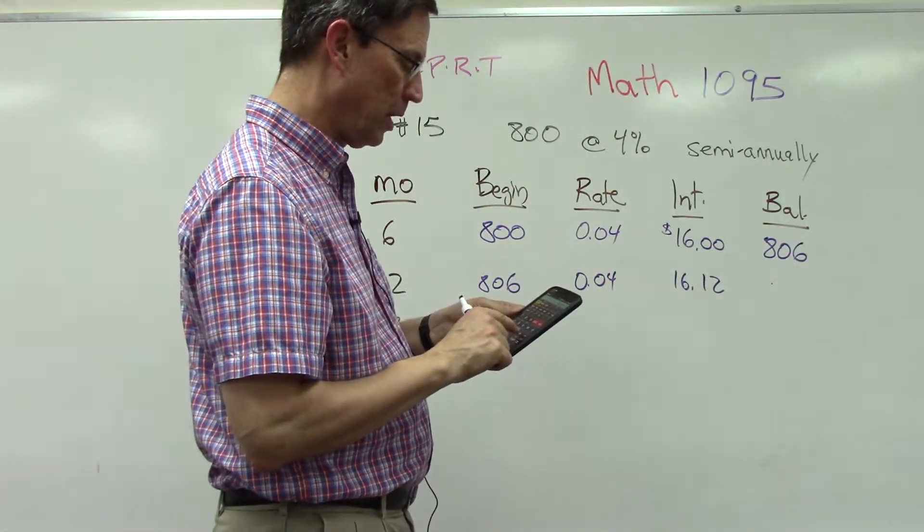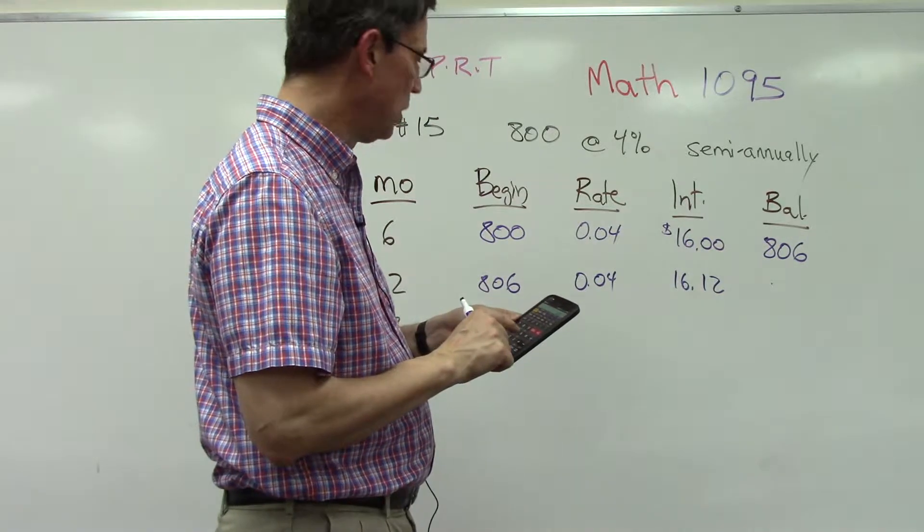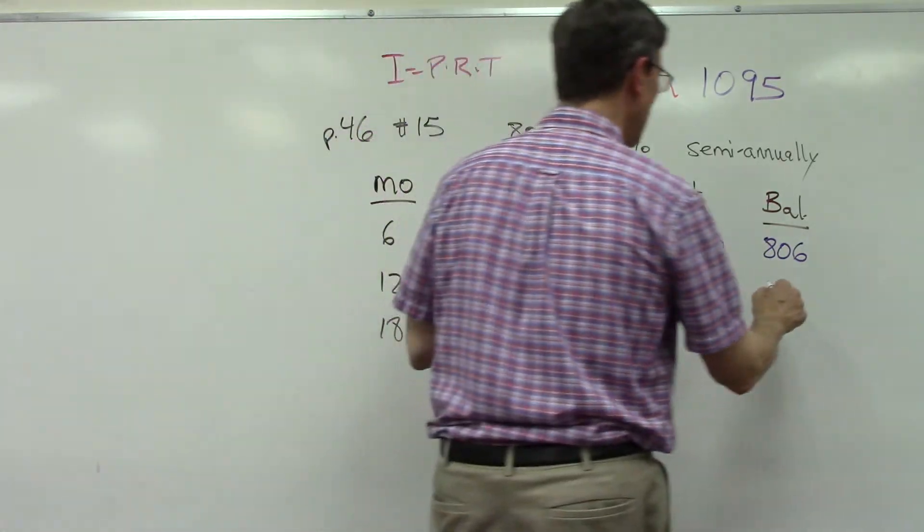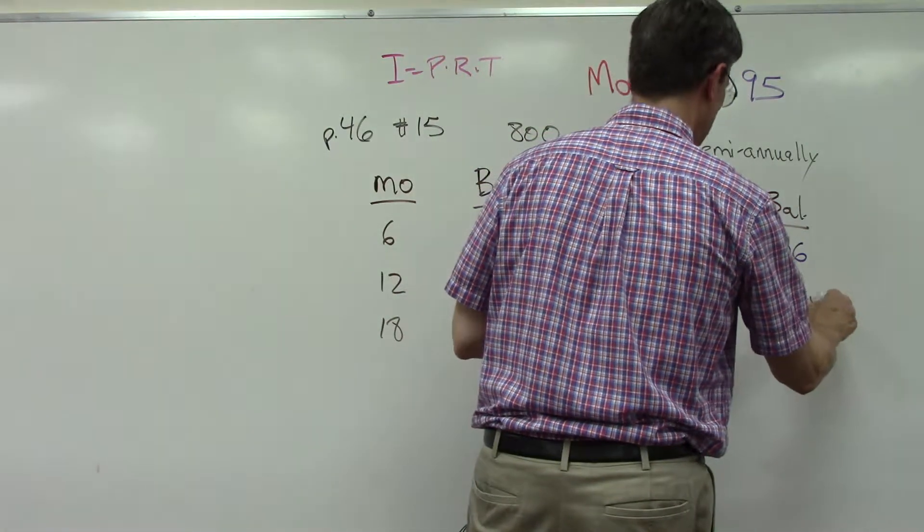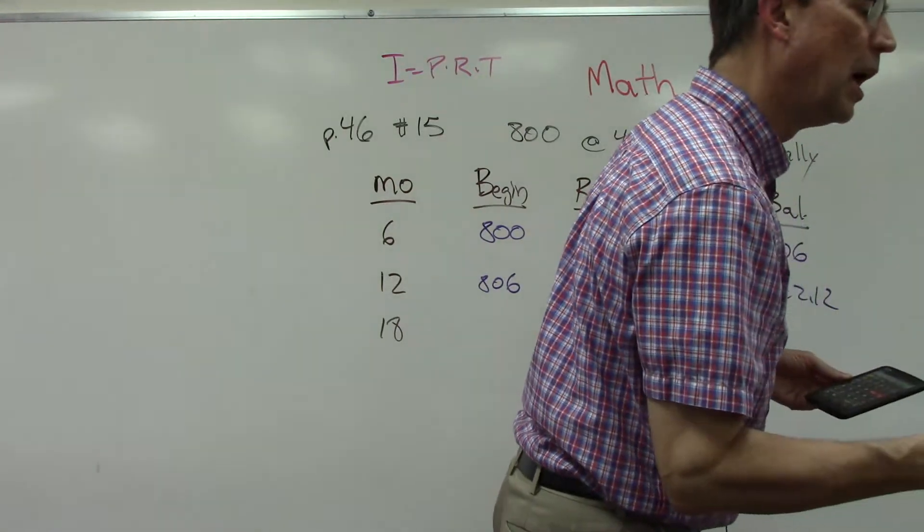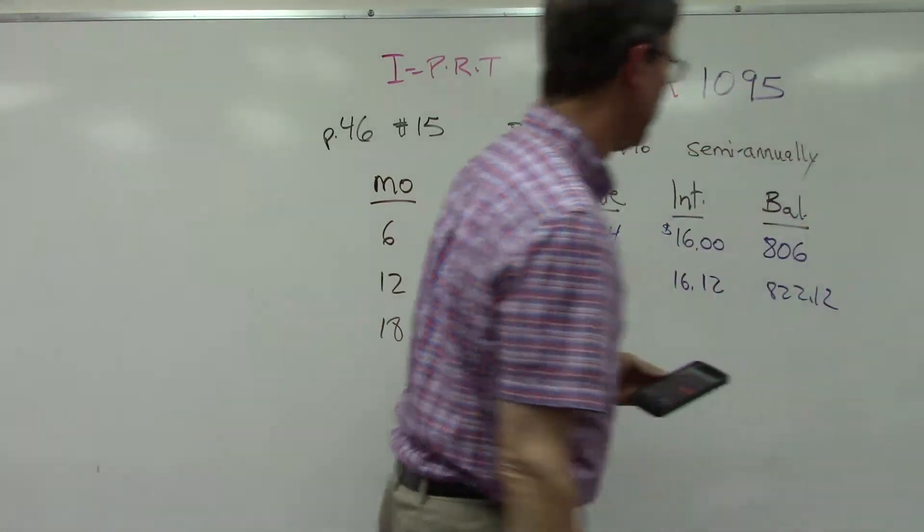And so now this becomes - we add that - plus the 806, now I have $822.12. Let me just see, does it stay rounded to the nearest dollar? No, carry it out.